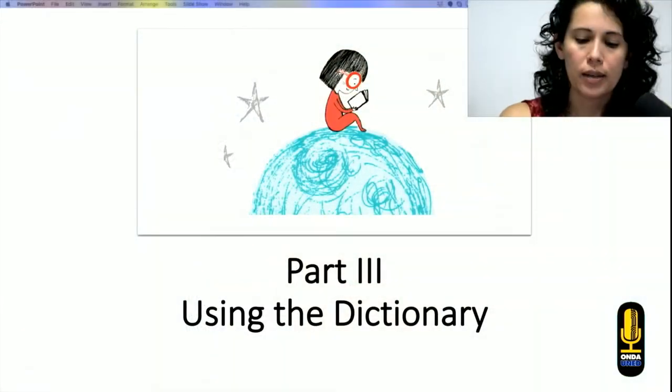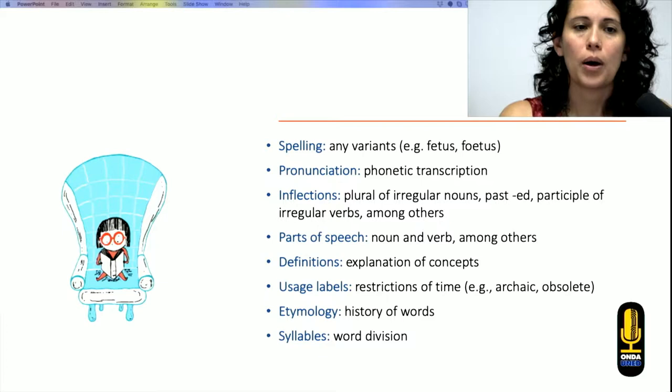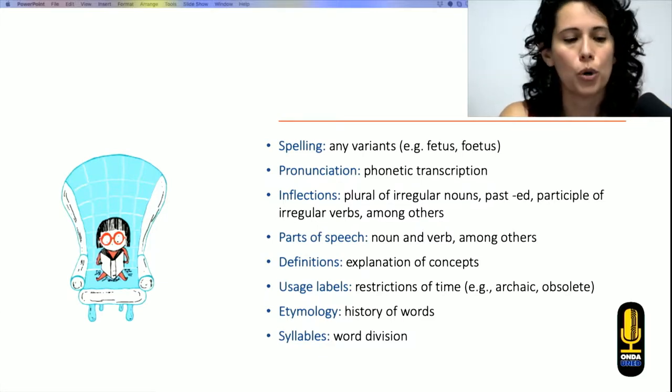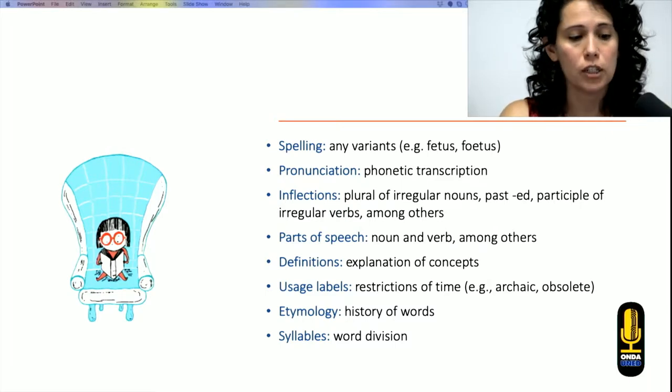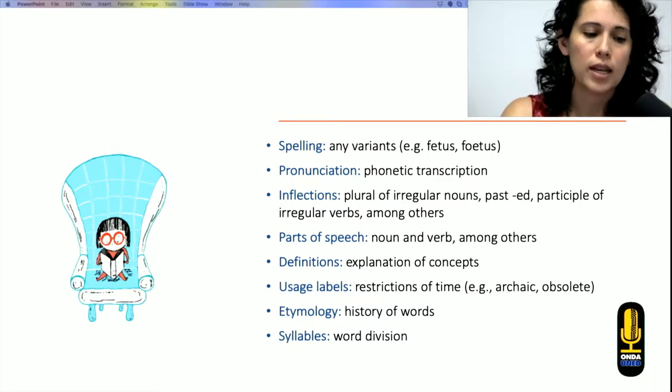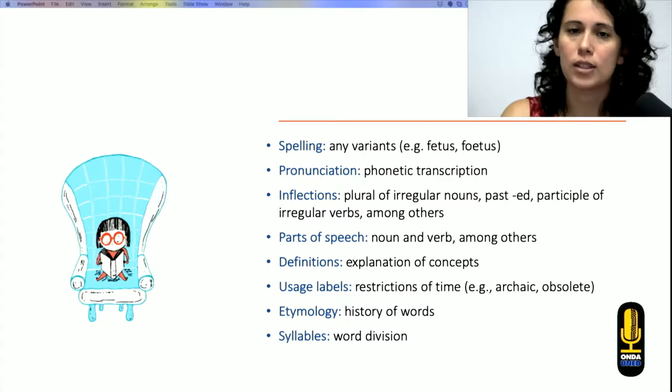So in a dictionary, we can find the spelling of a word, the pronunciation, inflection, part of speech, the definition, usage, labels, etymology, and syllables. Let's take a look at all of this in a more detailed way.